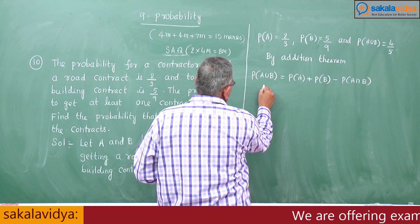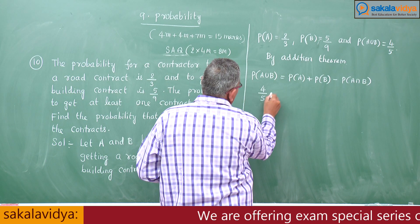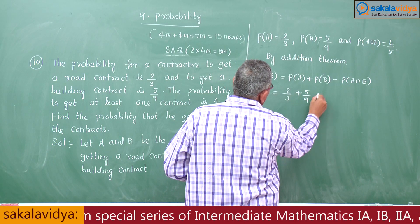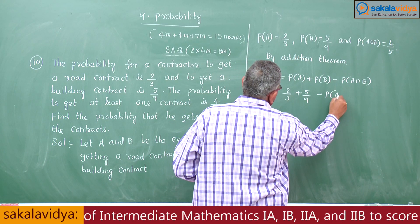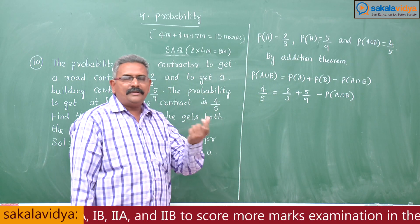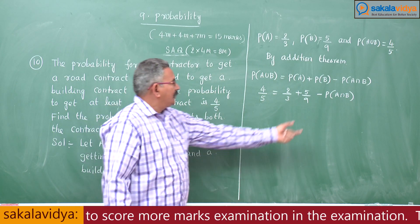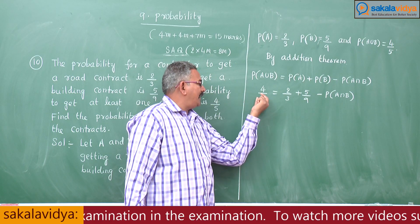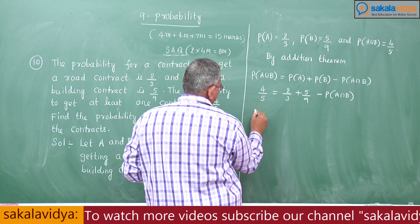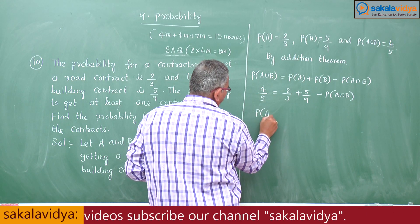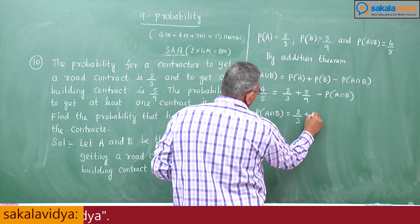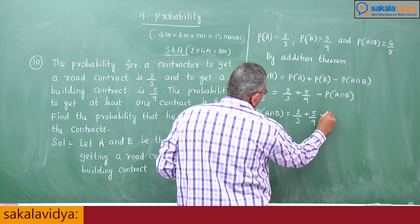So, 4 by 5 equals 2 by 3 plus 5 by 9 minus P of A intersection B. Our aim is to determine P of A intersection B. Rearranging: P of A intersection B equals 2 by 3 plus 5 by 9 minus 4 by 5.